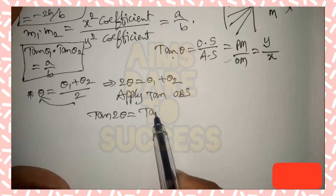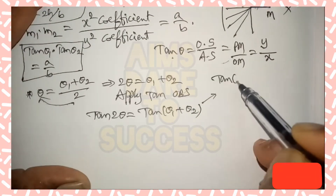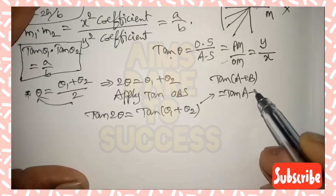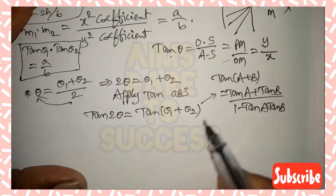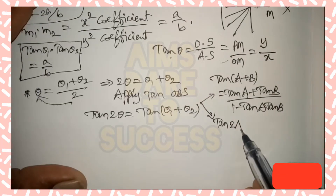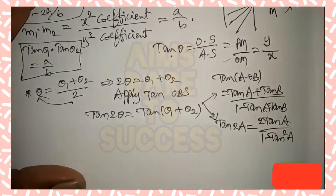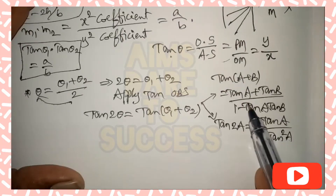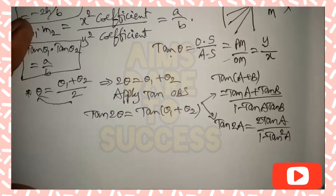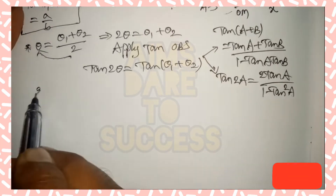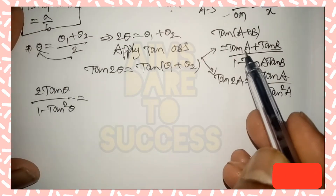Now we apply two identities: the tan addition formula tan(A + B) = (tan A + tan B) / (1 − tan A · tan B), and the double angle formula tan 2A = 2 tan A / (1 − tan² A). For tan(θ₁ + θ₂), set A = θ₁ and B = θ₂. For tan 2θ, substitute A = θ, giving tan 2θ = 2 tan θ / (1 − tan² θ).